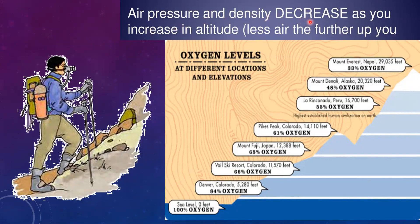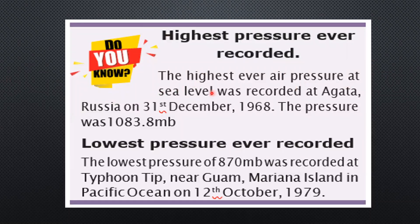Air pressure and density decrease as altitude increases, so when you go higher there is less air. That is why mountaineers carry bottled oxygen when they climb. At sea level you have 100% oxygen, but at Mount Everest — which is 29,035 feet high — there is only 33% oxygen. The highest air pressure at sea level was recorded at Agata on 31st December 1968 at 1083.8 millibars. The lowest pressure ever recorded was 870 millibars at Typhoon Tip near Guam, Mariana Islands in the Pacific Ocean on 12th October 1979.